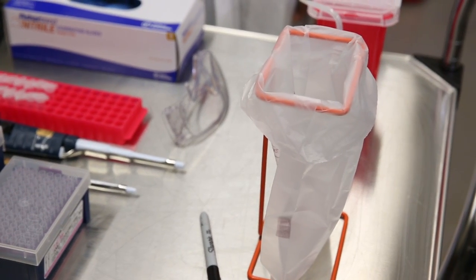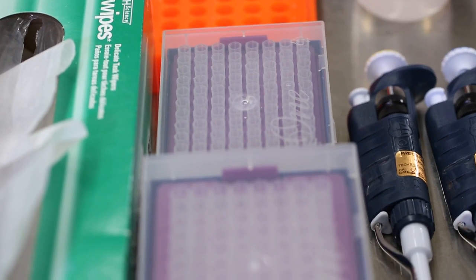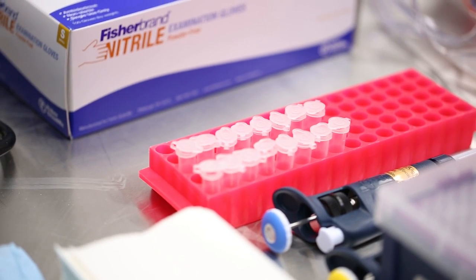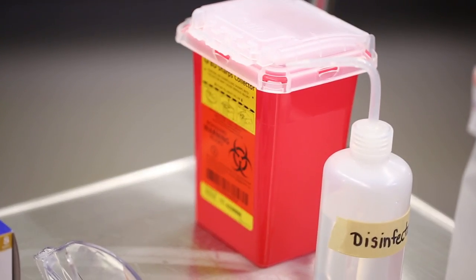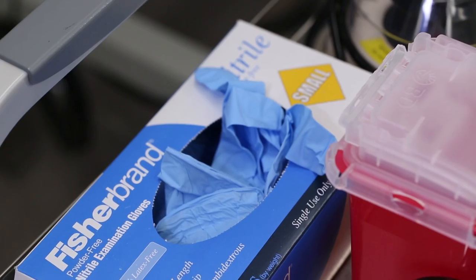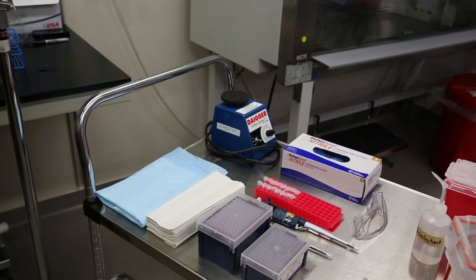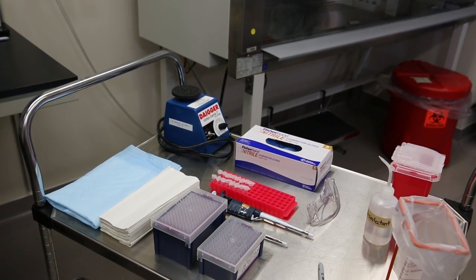Materials such as absorbent pads, a biohazard waste container, pipettes, pipette tips, microfuge tubes, a vortex, a small sharps container, paper towels, and whatever else you may need. Place these materials on a cart next to the BSC.